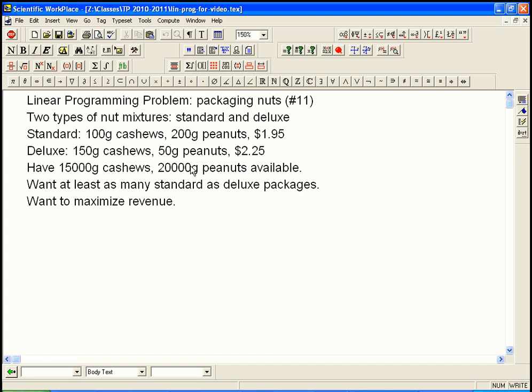Here's an example of a linear programming problem. We're packaging up nuts into mixtures. This is number 11 from the book. We have two types of nut mixtures, standard and deluxe. We have the standard mixture, which is more peanuts than cashews. 100 grams of cashews and 200 grams of peanuts. It sells $1.95.